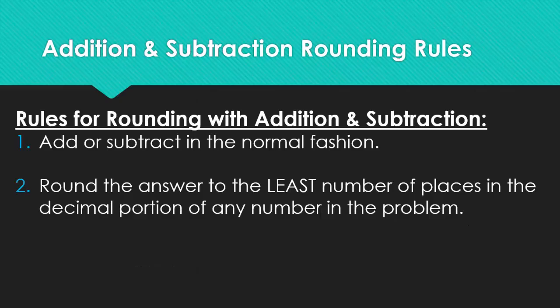So rules for rounding with addition and subtraction, you add or subtract like normal, but you're going to round the answer to the least number of places of decimals in the actual numbers in the problem. I know that sounds kind of strange, but you're going to take the numbers that you're using for the math, you're going to figure out how many decimal places there are, and you're going to round to the least number of decimal places.